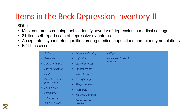The Beck Depression Inventory-2 (BDI-2) lists 21 depressive symptom items, demonstrating strong psychometric qualities across medical and minority populations. The 21 items include sadness, pessimism, sense of failure, loss of pleasure, guilt, expectation of punishment, self-dislike, self-blame, suicidal ideation, crying, agitation, loss of interest, indecisiveness, worthlessness, loss of energy, sleep changes, irritability, appetite changes, concentration problems, fatigue, and loss of sexual interest.